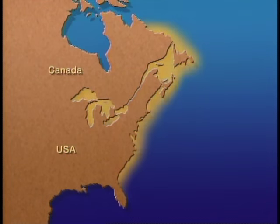American shad are found along the entire east coast of North America, ranging from the St. Johns River in Florida to Labrador. On the west coast, American shad are considered an exotic species, having been introduced at the end of the 19th century. They are now found from Sacramento, California to southern Alaska.